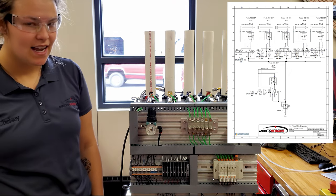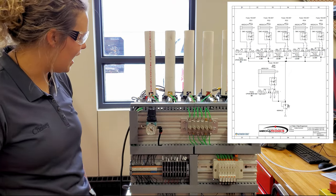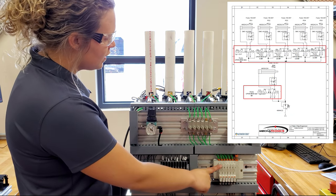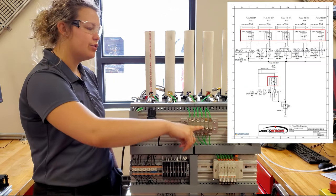Here is the back of the panel where I have my regulator, my flow controls, and my valves. So we have all of the flow controls hooked up, and all of the tubing runs through the conduits to the valves.